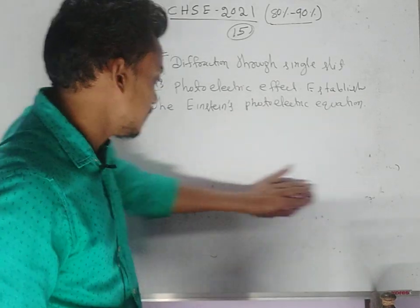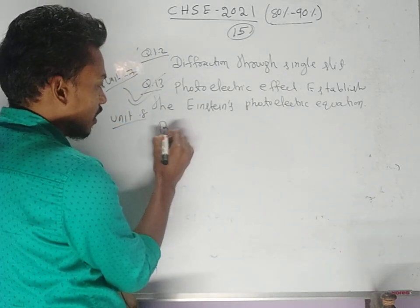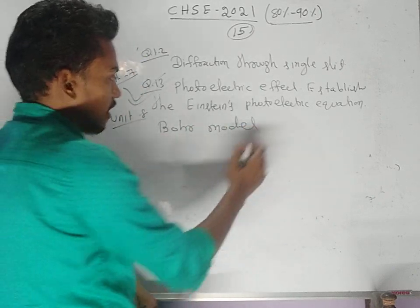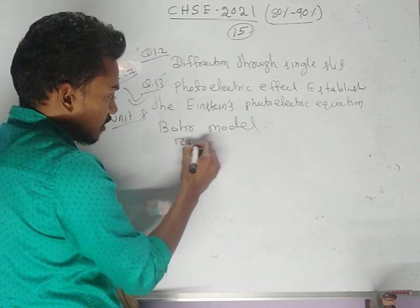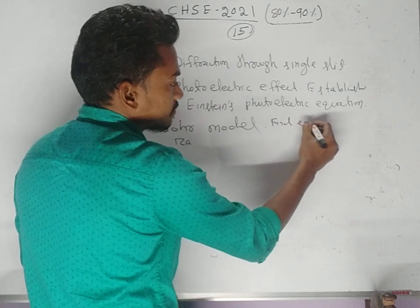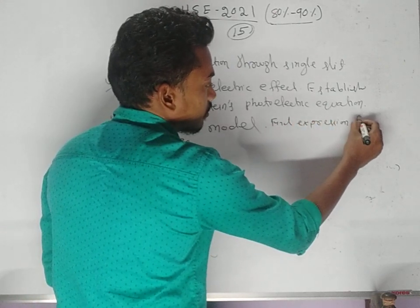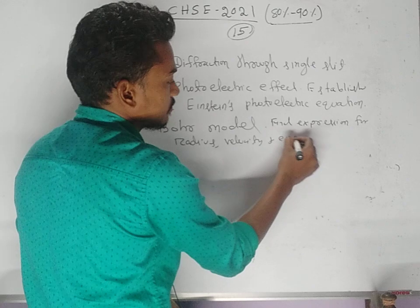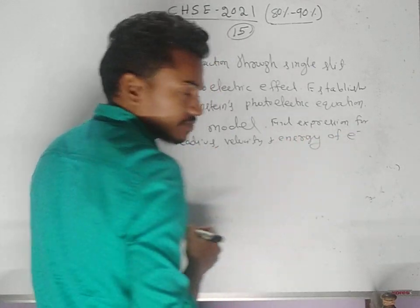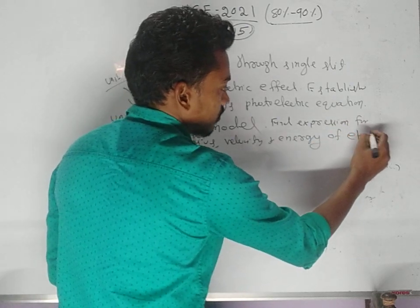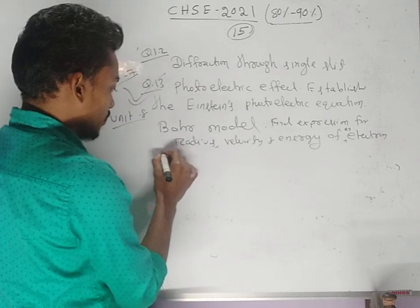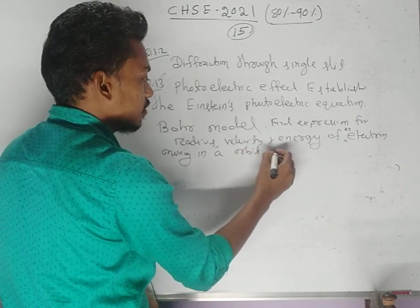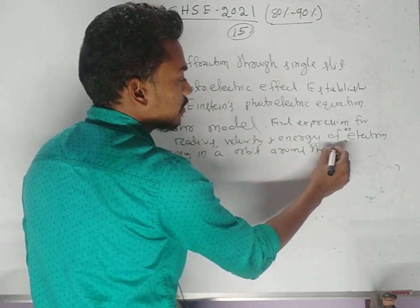Question number fourteen from atomic physics: state the postulates of Bohr's atomic model and find the expressions for the radius, velocity, and energy of an electron moving in a circular orbit around the nucleus.